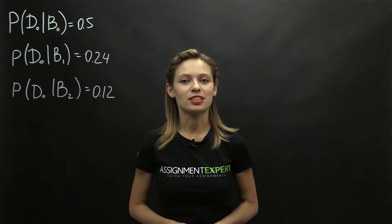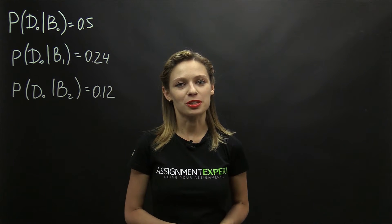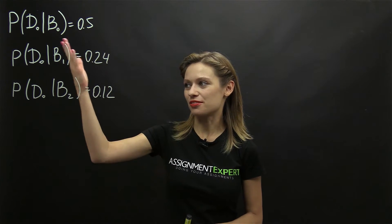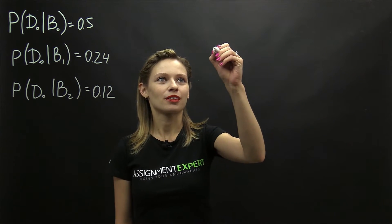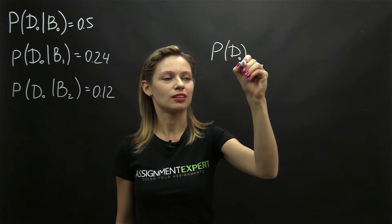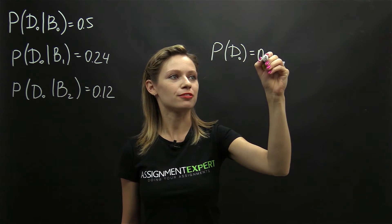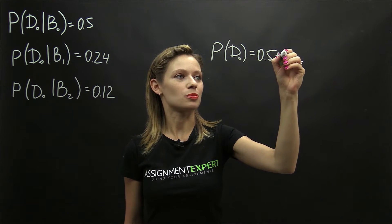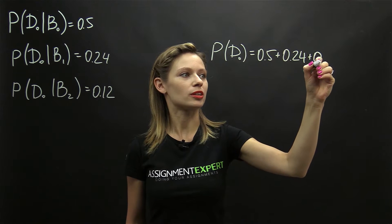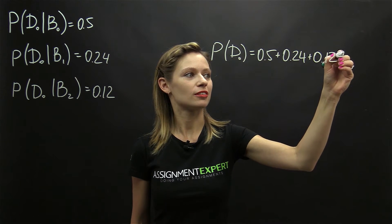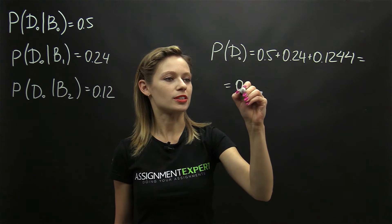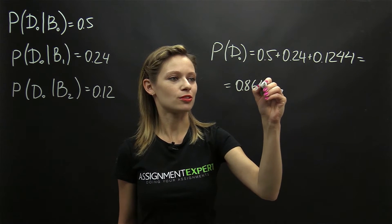The total probability of selecting two non-defective components out of one of the batches is equal to the sum of the probabilities of these events. So, probability of D0 equals 0.5 plus 0.24 plus 0.1244, which equals 0.8644.